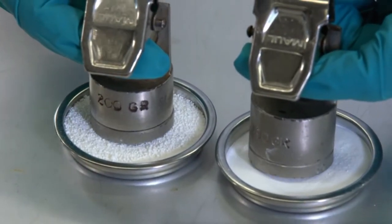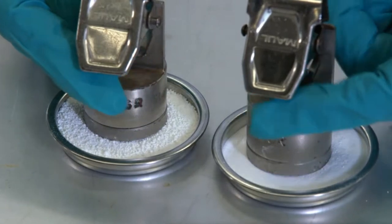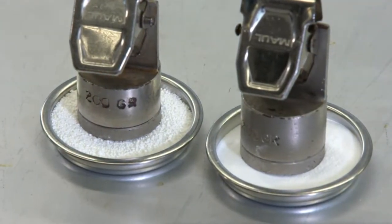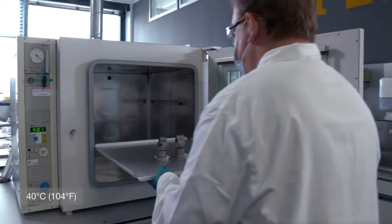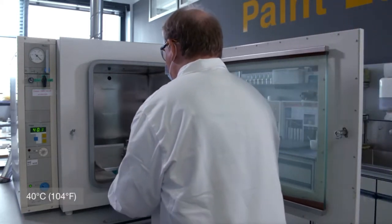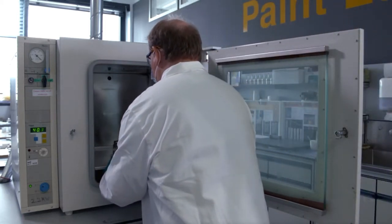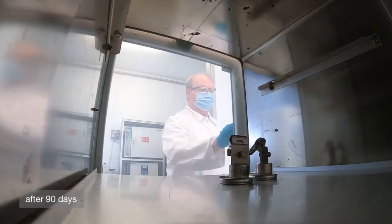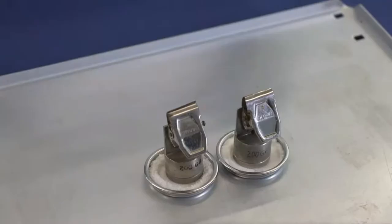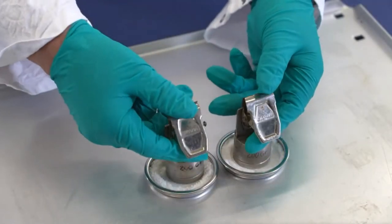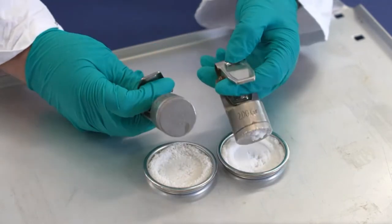The new microgranulate is form stable. Even after three months storage under high temperature of 40 degrees Celsius, the product will not agglomerate. This test corresponds to a storage stability of around one year under regular conditions. The product can be stored dimensionally stable for up to one year on a standard pallet.